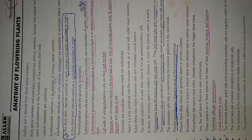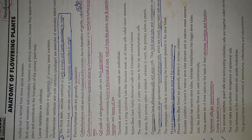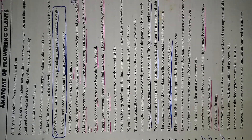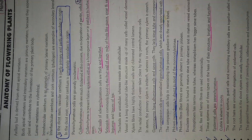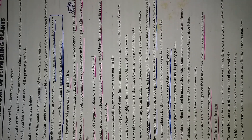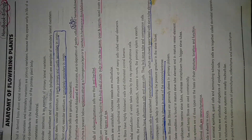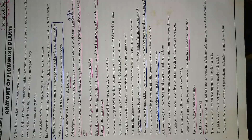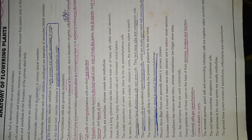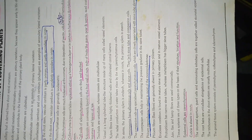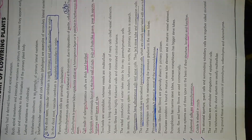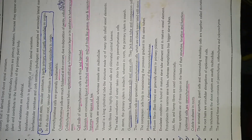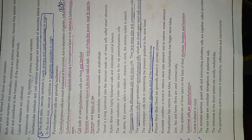In dicot roots, vascular cambium is compared to secondary in nature. Parenchymatous cells are generally isodiametric. Collenchyma cells are much thickened at the corners due to the deposition of pectin, cellulose, and hemicellulose. Collenchyma is present below the epidermis either in homogeneous layers, as seen in herbaceous dicot stems. Sclerenchyma cells have thick and lignified walls; scleroids are commonly found in the fruit walls of nuts and pulp.